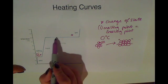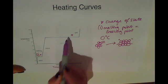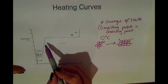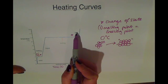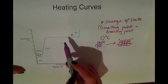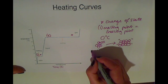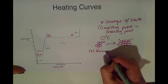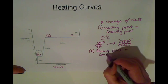The second change of state point showed by this horizontal part of the graph is the boiling point. Now the boiling point is when something turns from a liquid into a gas and it is also the same as the condensing point. So we'll label this part two. This is the boiling point, which is also the condensing point.